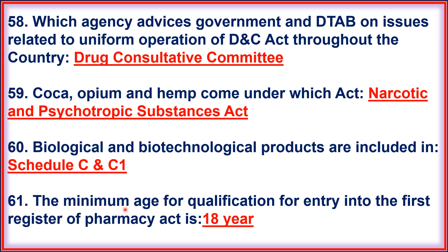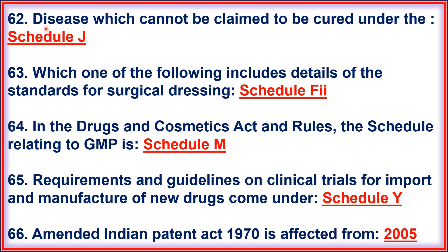59. Coca, Opium and Hemp comes under the Narcotic and Psychotropic Substance Act. 60. Biological and Biotechnological products are included in Schedule C and C1. 61. The minimum age for qualification for entry into the first register under the Pharmacy Act is 18 years. 62. Disease which cannot be claimed to be cured comes under Schedule J. 63. Details of the standard for surgical dressing are in Schedule F2.